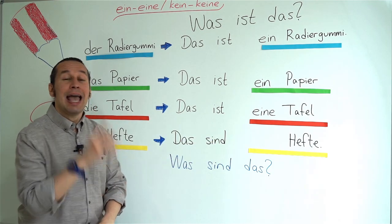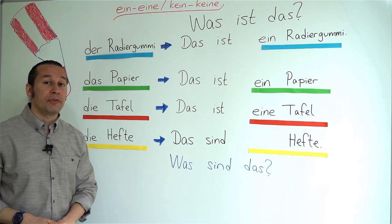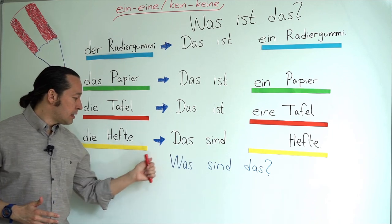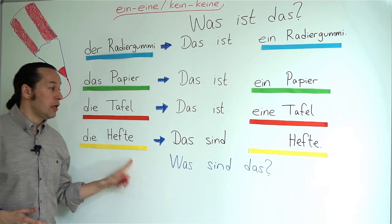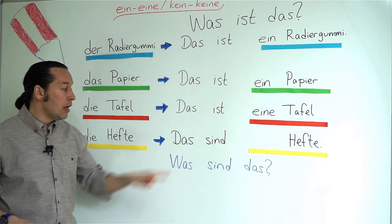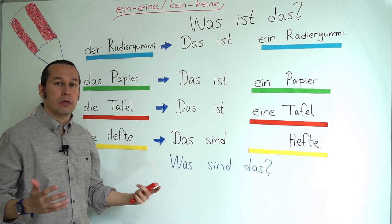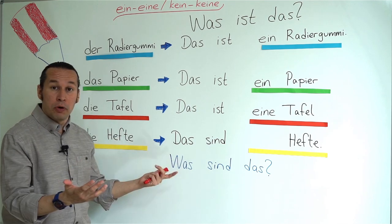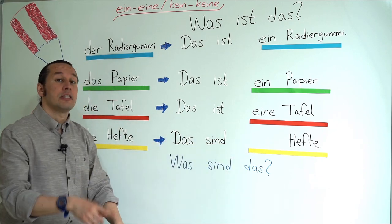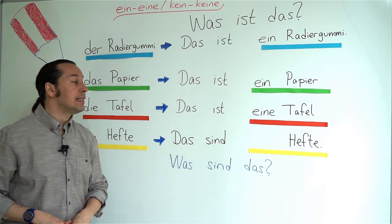The singular form of die Hefte is das Heft — notebook. In the plural form it becomes die Hefte, so instead of 'ist' I use 'sind', and there is no ein or eine. I say: Das sind Hefte — these are notebooks. If it's a specific kind: Das sind die Hefte. For the question: Was sind das? — Das sind Hefte.